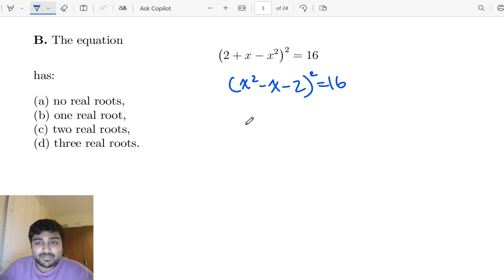And now this means that x² - x - 2 is plus or minus 4, so kind of square rooting like so. And now we just have two different cases to consider, the plus 4 case and the minus 4 case.